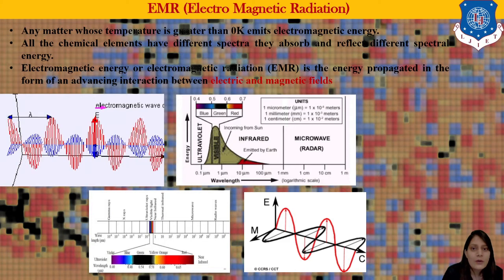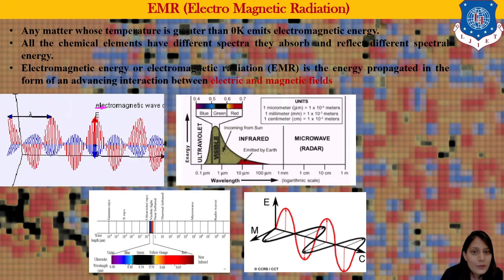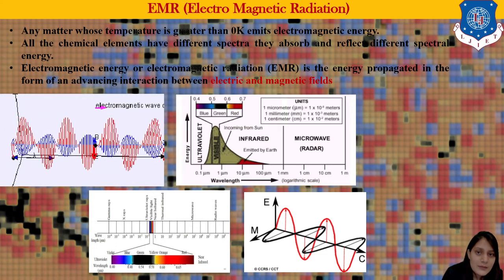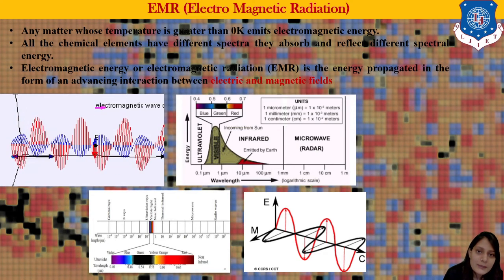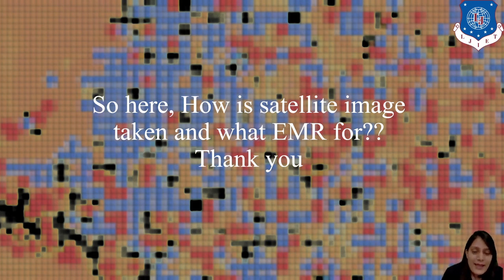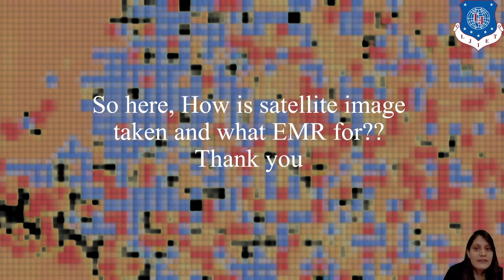Electromagnetic radiation is the energy propagated in the form of advancing interaction between electrical and magnetic fields, giving us the whole electromagnetic spectrum. All matter whose temperature is greater than zero kelvin emits electromagnetic energy. Humans can see only the visible range — we cannot see near infrared, X-rays, or gamma rays. According to this range distribution, we can do analysis. This is how EMR works and how satellite images are taken.